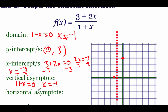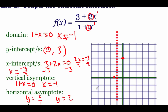Now look at the horizontal asymptote. The highest power on top is one, and the highest power on bottom is also one. Since the powers are equal, we use the leading coefficients. On top, the leading coefficient is two; on the bottom it's one. Reducing that gives us y equals two. Draw that line at y equals two.